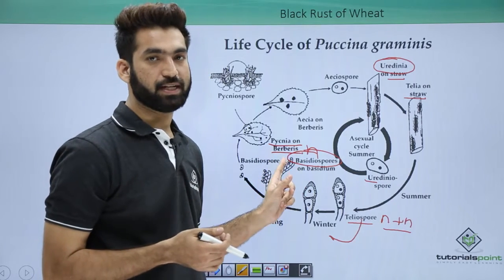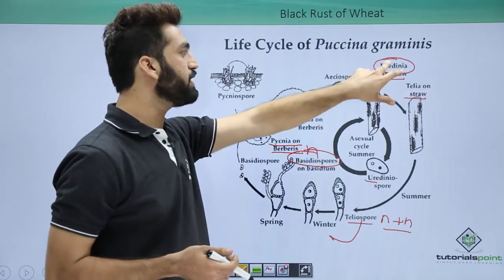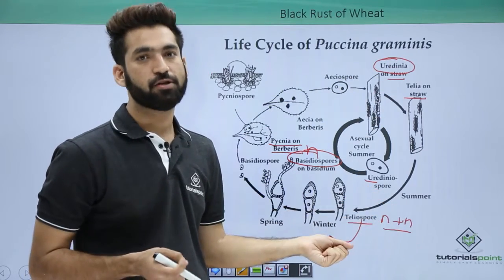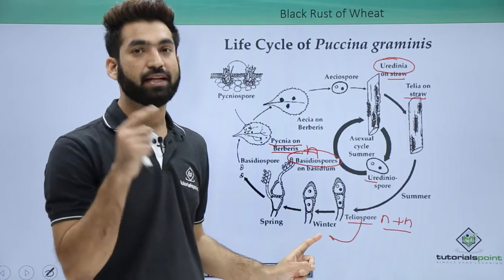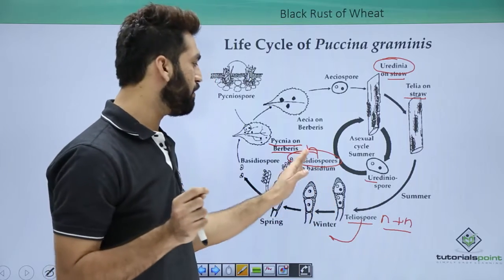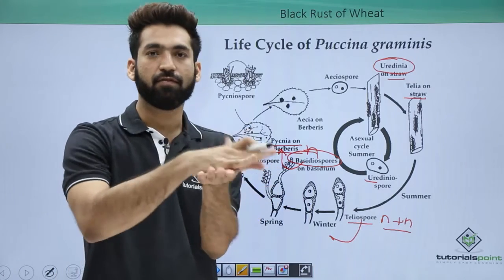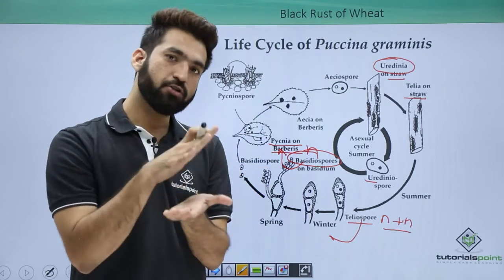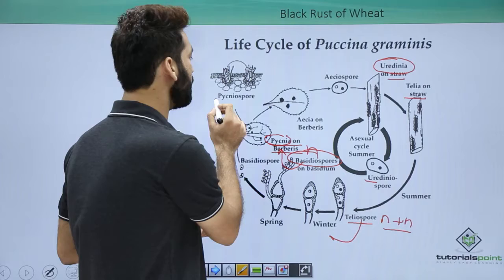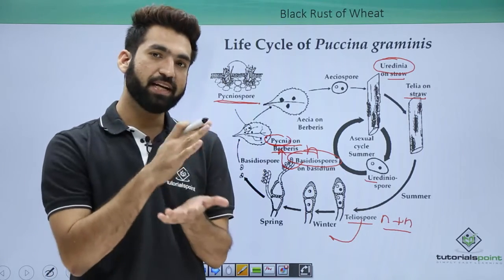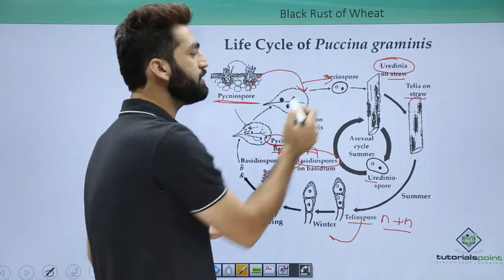The alternate host is Barberry. So far, while on wheat, Puccinia forms two types of spores — urediniospores and teliospores. The teliospores fall to the soil, karyogamy and meiosis occur, and basidiospores are produced. The basidiospores, which are haploid, then fall onto the upper surface of Barberry leaves. On the Barberry leaves they form the next type of spores called pycniospores, as you can see here.